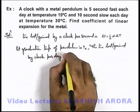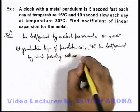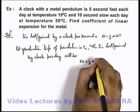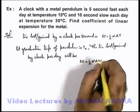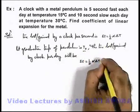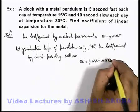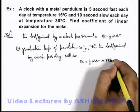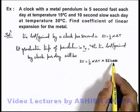We can write delta t is equal to half alpha delta t, delta t is the difference of temperature at T₀, multiplied by 86400, which is the number of seconds in a day.